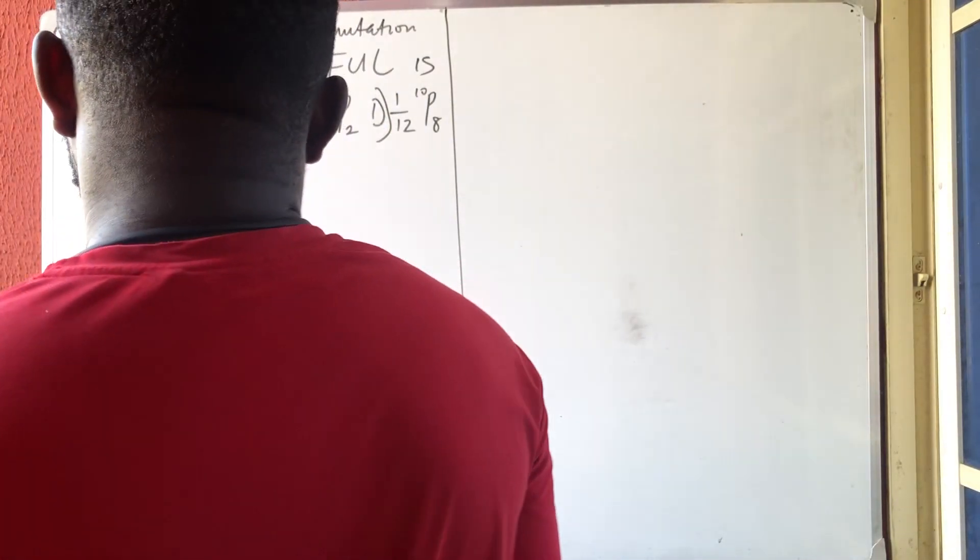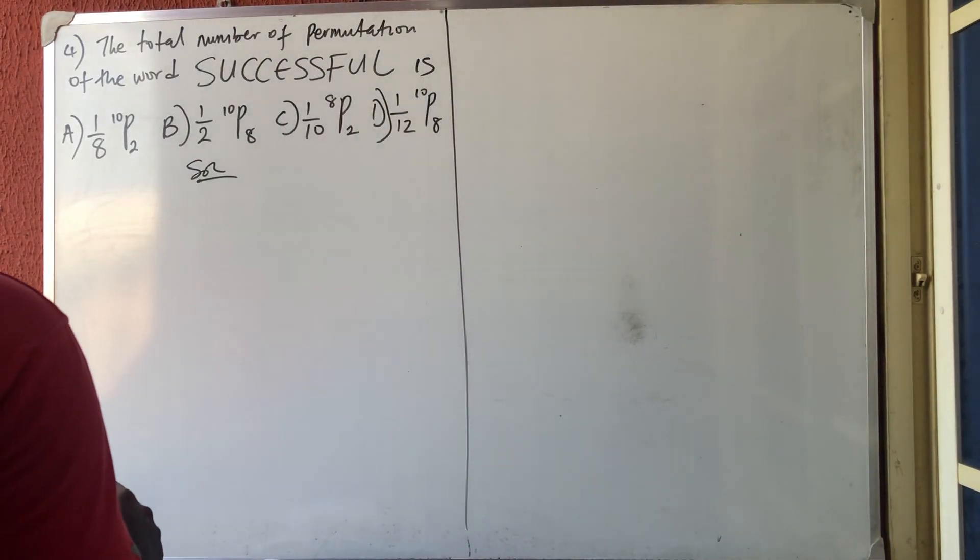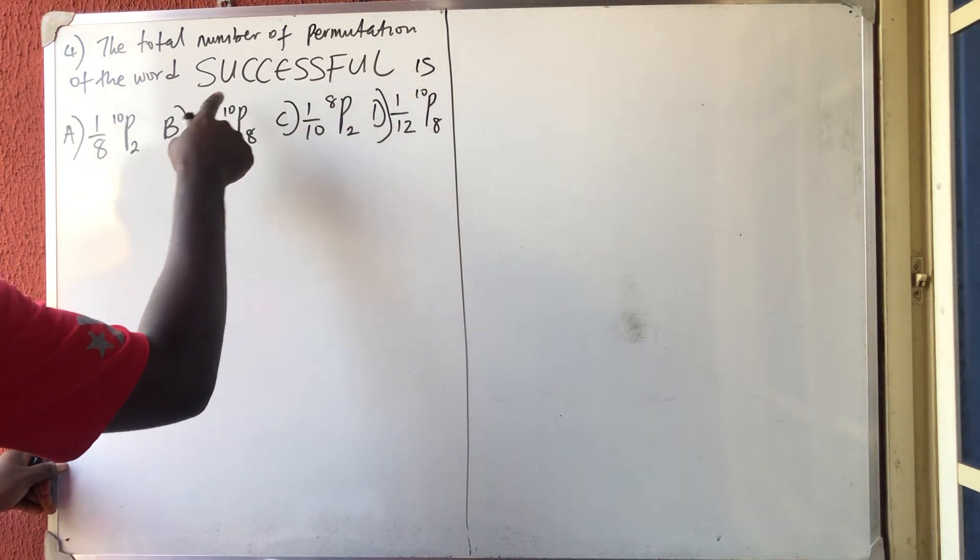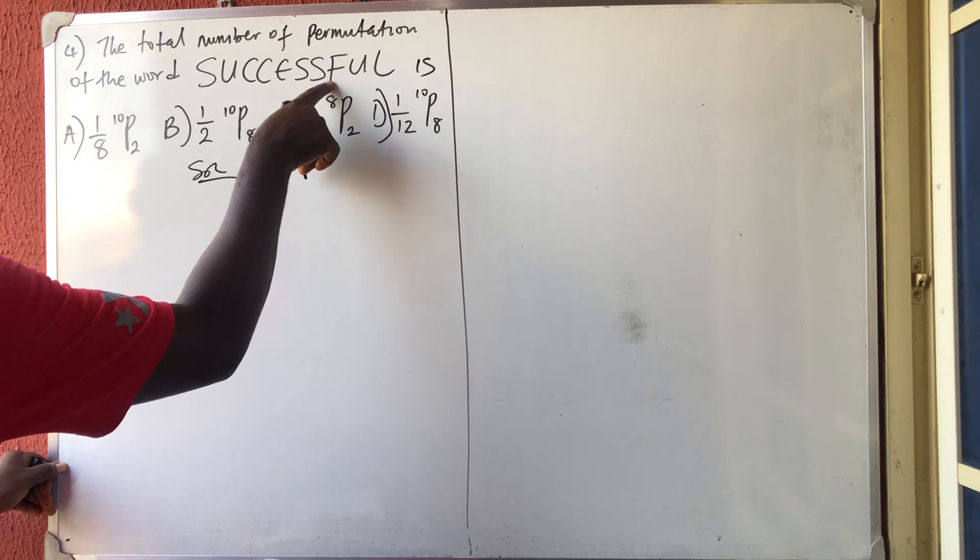Alright, let us solve this simple problem. They said the total number of permutations of the word SUCCESSFUL is dash. Okay, now the arrangement of this word, how many are they? One, two, three, four, five, six, seven, eight.